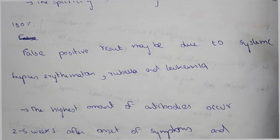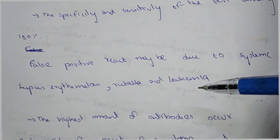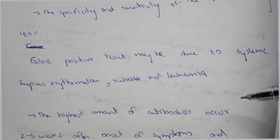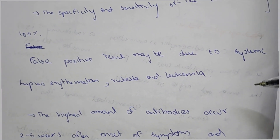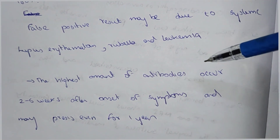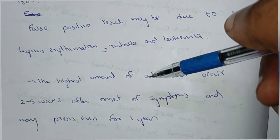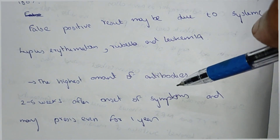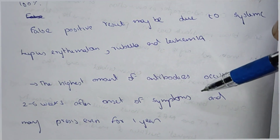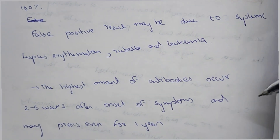False positive results may be due to systemic lupus erythematosus, rubella, and leukemia — these are conditions which can produce a false result. The highest amount of antibodies occur in the second to fifth week after the onset of symptoms, and may persist for even one year.